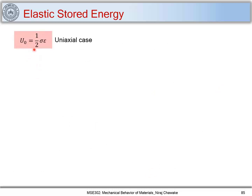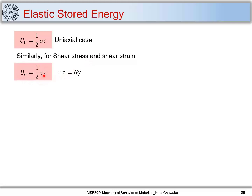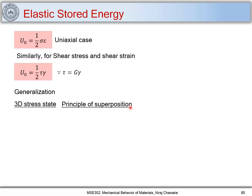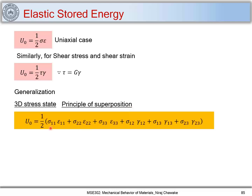In the uniaxial case u₀ = ½σε. Similarly, for shear stresses and shear strains, u₀ = ½τγ, using the relation that shear stress is related to shear strain through the shear modulus G. For a general 3D stress state, using the principle of superposition, we include contributions from both normal and shear components, giving in tensor notation: u₀ = ½σᵢⱼεᵢⱼ.